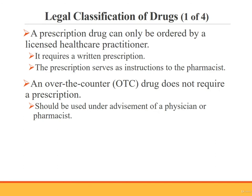A prescription drug can only be ordered by a licensed healthcare practitioner via a prescription, which is a written explanation to the pharmacist regarding the name of the medication, the dosage, and the times of administration. Antibiotics and heart medications are examples of drugs available only by prescription. An over-the-counter drug, or OTC drug, does not require a prescription. OTC drugs can have dangerous reactions with prescription drugs, and it is always best for a physician or pharmacist to advise patients about their use.